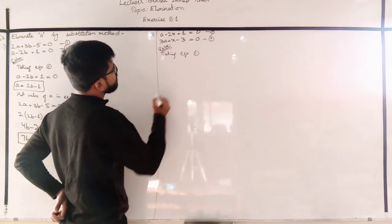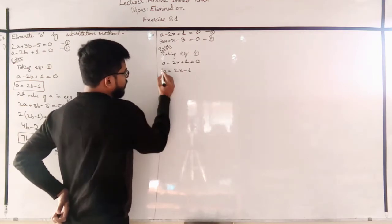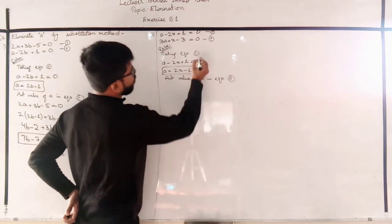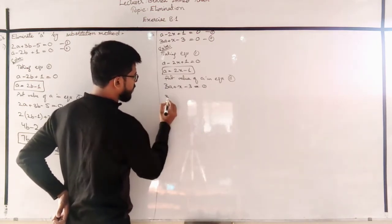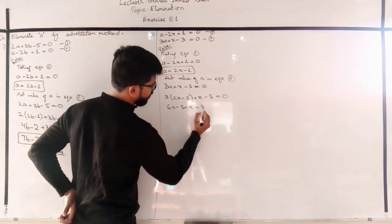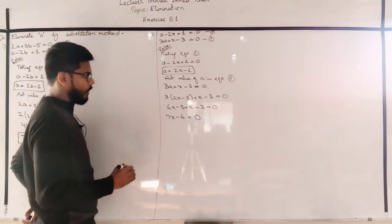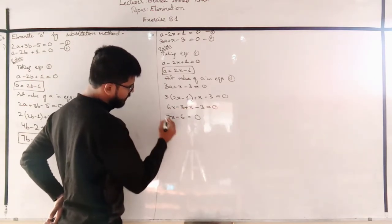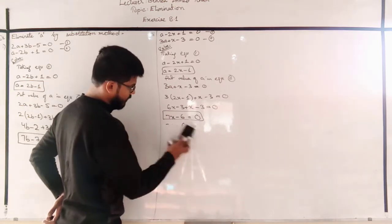Taking equation 1: A minus 2X plus 1 = 0. Isolating A: A = 2X minus 1. Now put the value of A into equation 2: 3A plus X minus 3 = 0. Substituting: 3(2X minus 1) plus X minus 3 = 0, which gives 6X minus 3 plus X minus 3 = 0, so 7X minus 6 = 0. This is your answer — A has been eliminated. You can further find X = 6/7, but that is not your task.